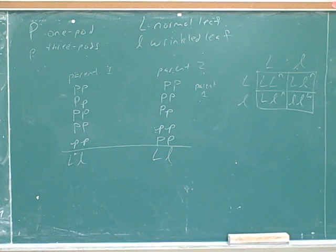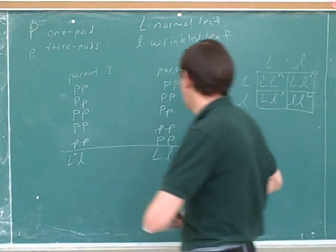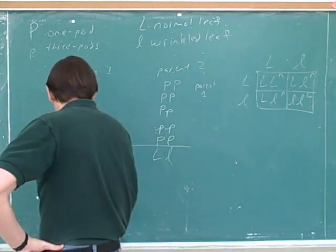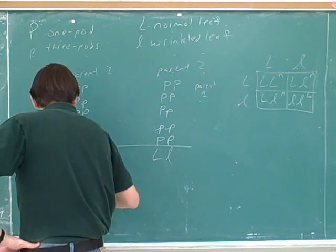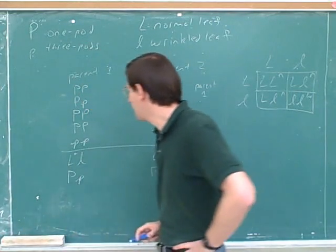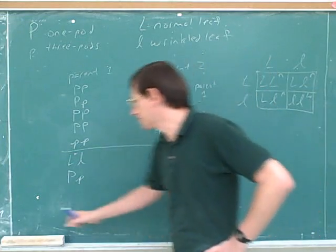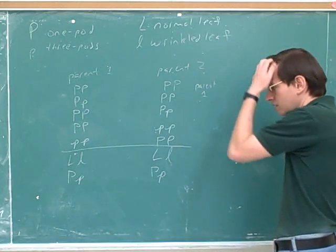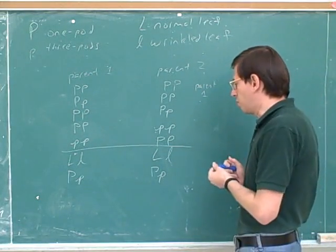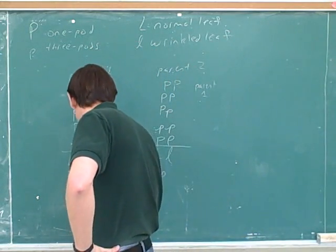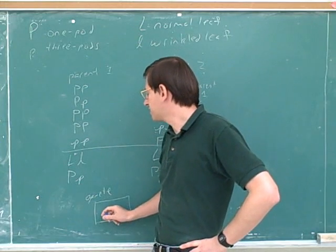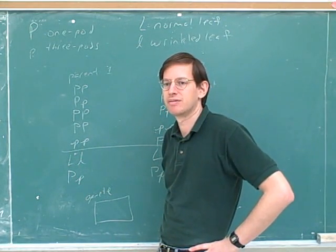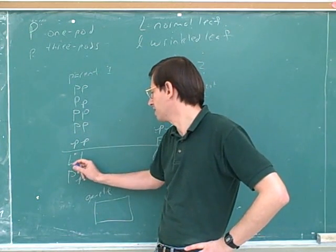Independent assortment is maybe more interesting and more important. In order to understand that we have to think about a case with two separate traits. Let's say this was one parent and this is the other parent, and we're going to make the Punnett square for this. So I'm going to make a gamete from this parent. Now what are the odds that this gamete will get the capital L allele from the parent?